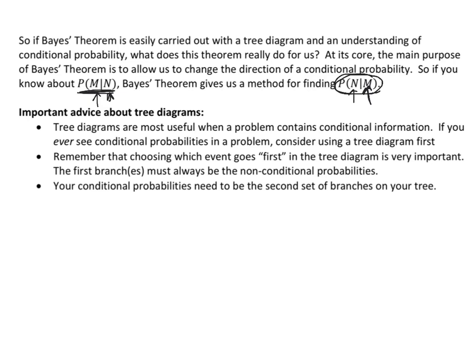As I mentioned, Bayes' Theorem can be done using tree diagrams instead of the formula. I have three important pieces of advice about tree diagrams. First, tree diagrams are most useful when a problem contains conditional probability information. If you ever see conditional probabilities in a problem, try using a tree diagram first. Conditional probability can be found in a Venn diagram, but it tends to work a lot better with tree diagrams. So to reiterate: if you ever see a problem with conditional probabilities, think about using a tree diagram first.